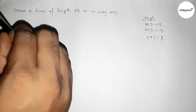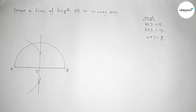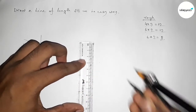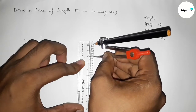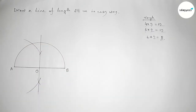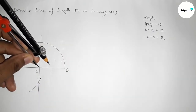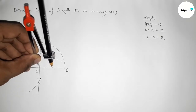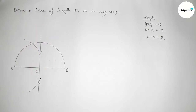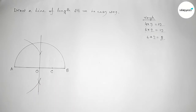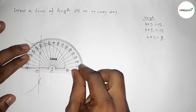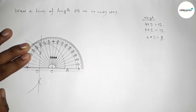Using the compass and taking the length OA and OB, we draw a semicircle. Next, we take a 2 centimeter length using the scale, put the compass on point O, and mark a point C, so OC equals 2 centimeter.